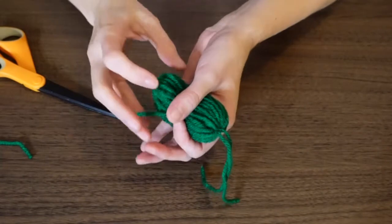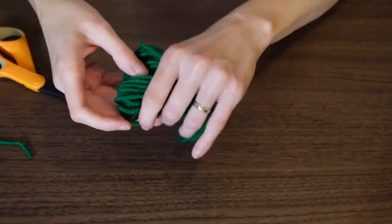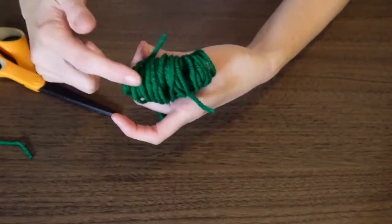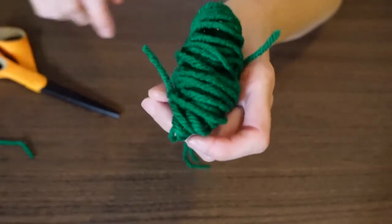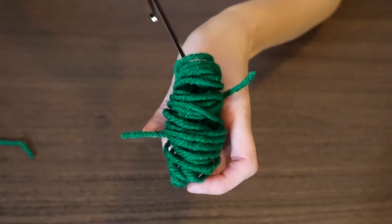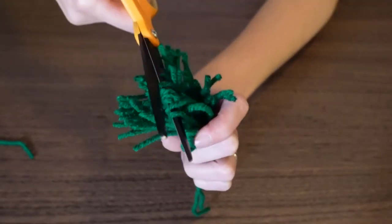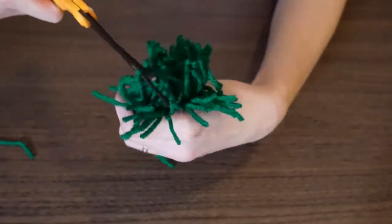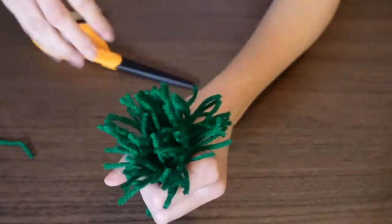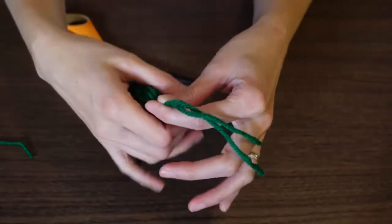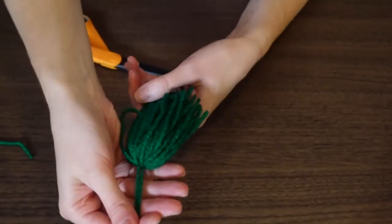So now you can see there's pretty much just a bunch of yarn loops that need to be cut. So just taking my scissors, I'll just go right inside those loops and make sure to cut them all. And then once you're done, you can just give it a fluff. So you can see this little tassel is starting to come together.